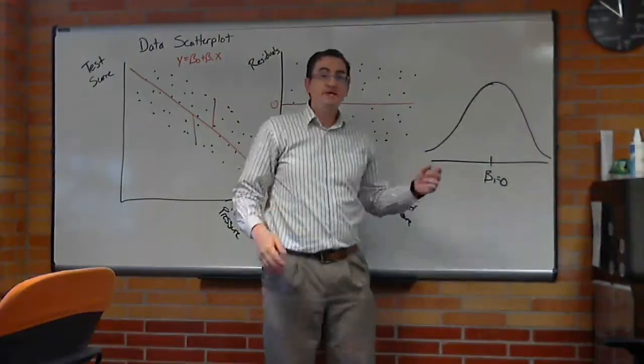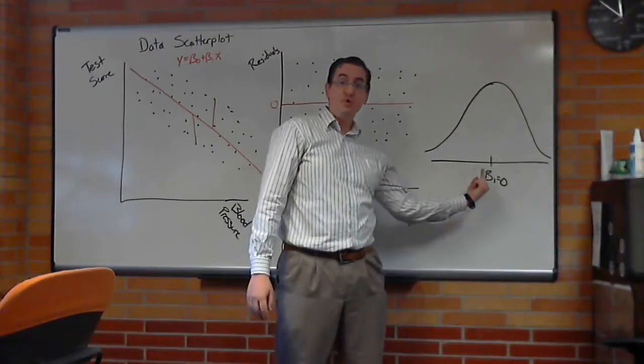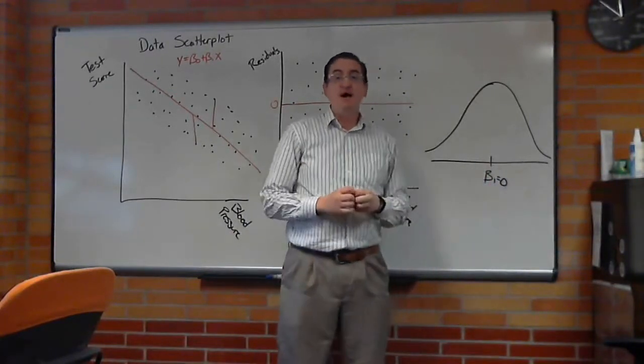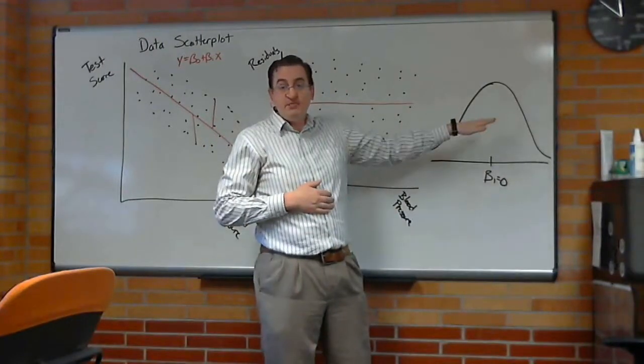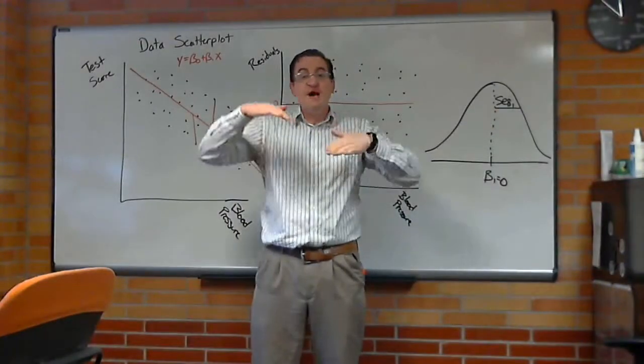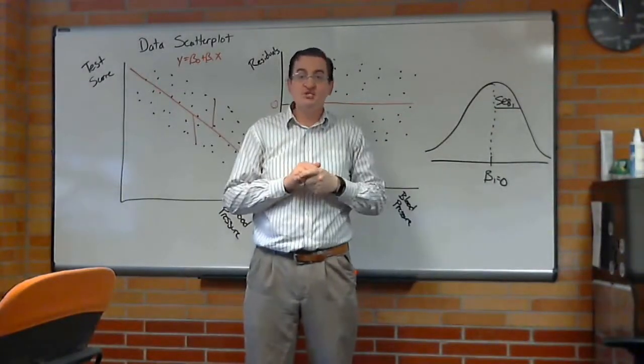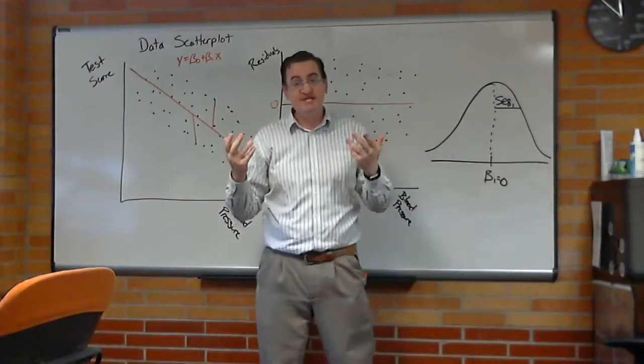But when you gather data, sometimes you get a slope that isn't zero, it's just a little bit negative, or just a little bit positive. How much positive or negative is reasonable? For that we call it the standard error. This standard error is a measure of how much wiggle room that slope could have, based off how much variability there is in the data.